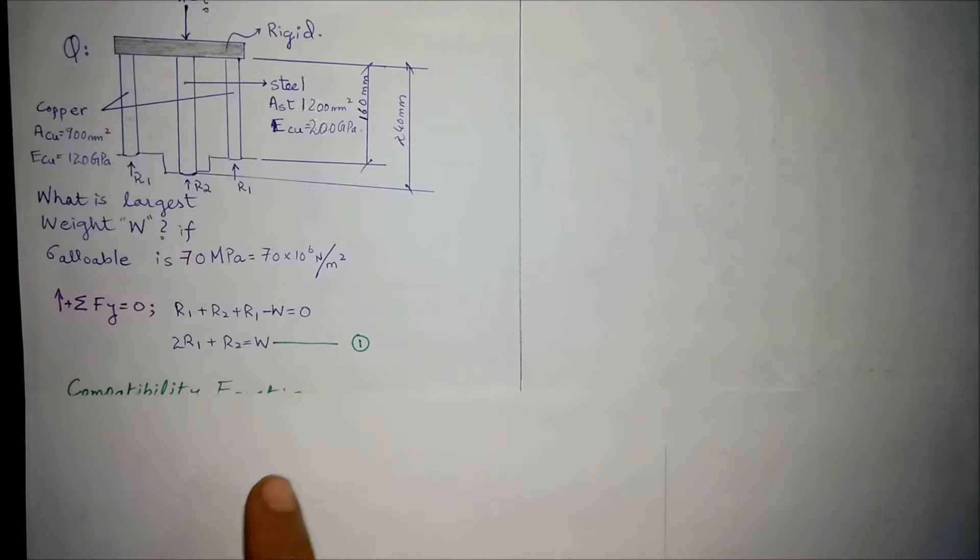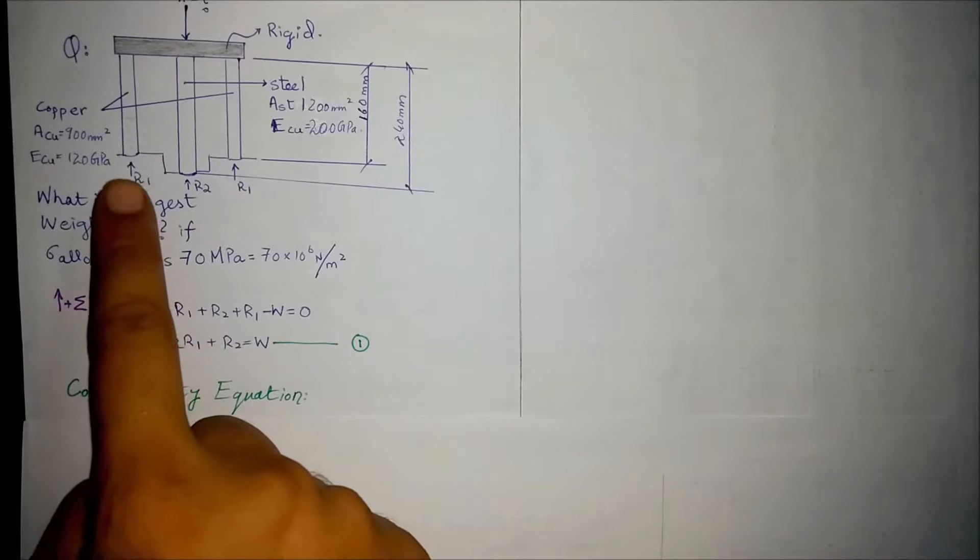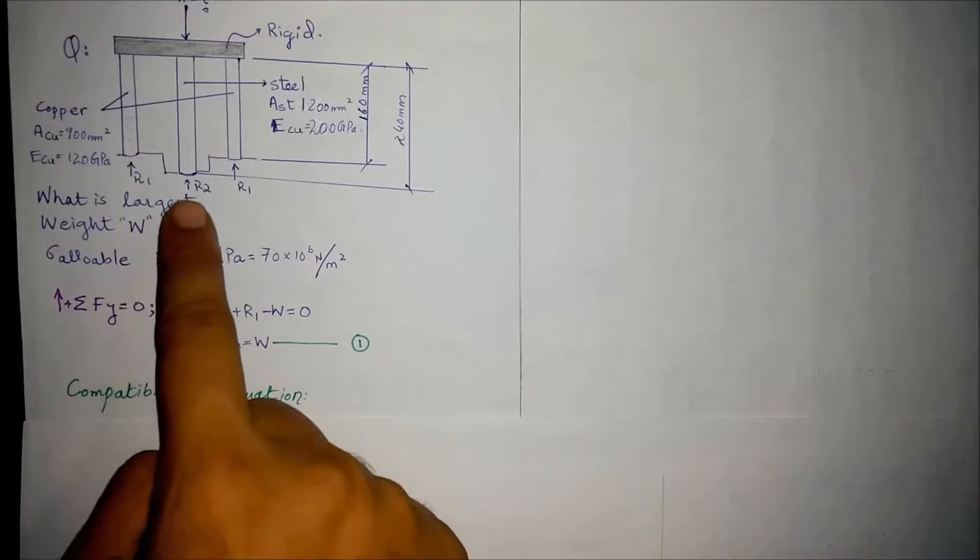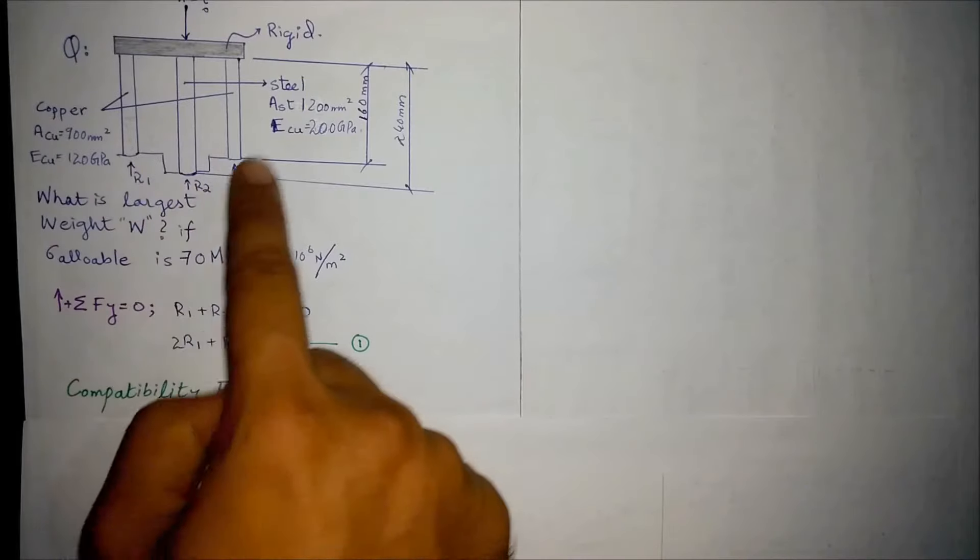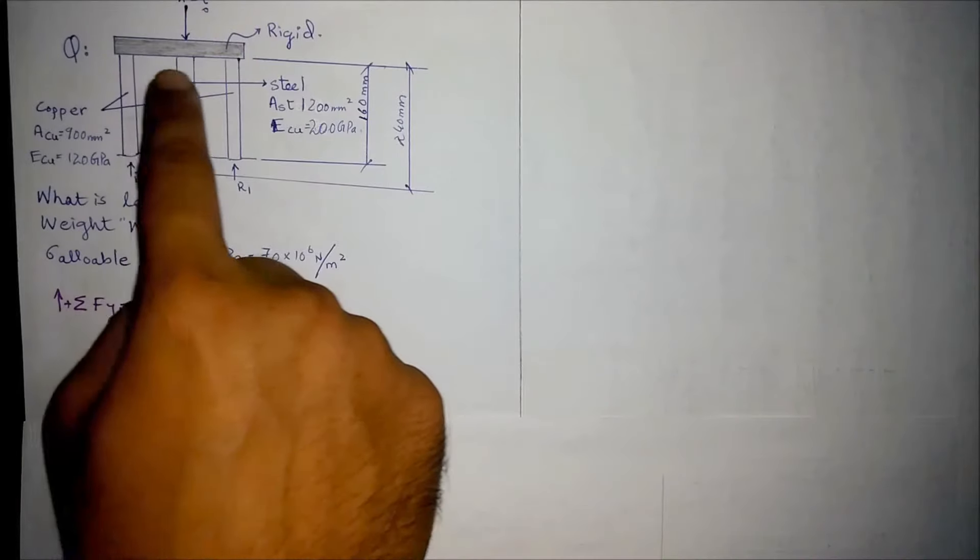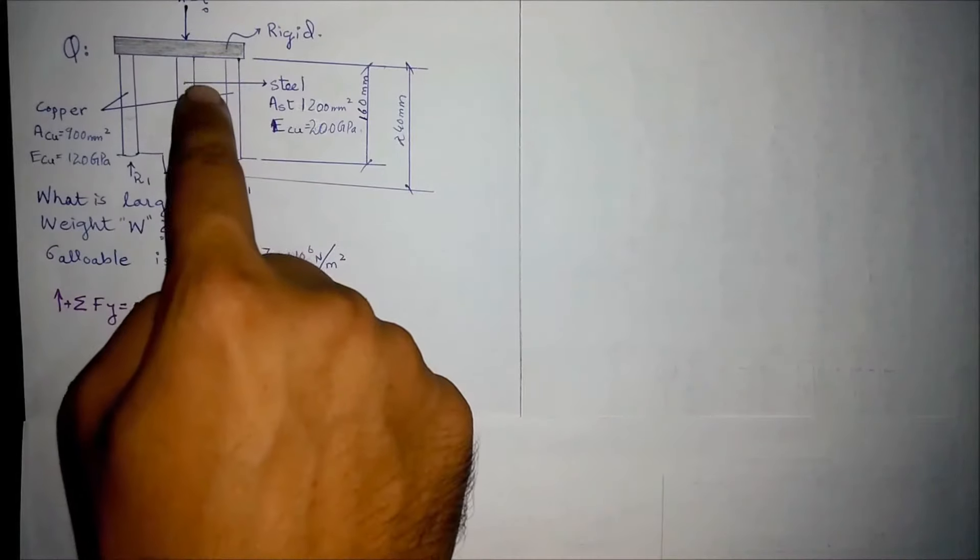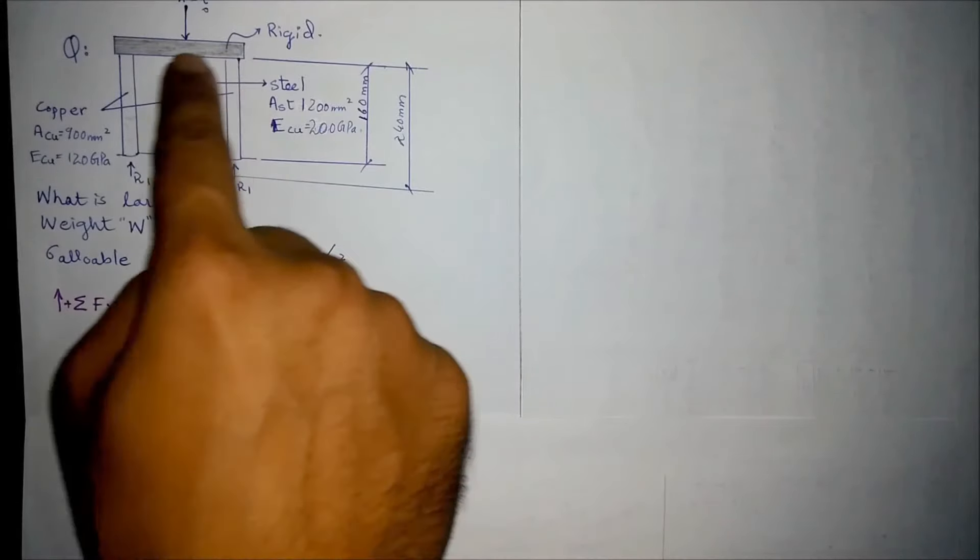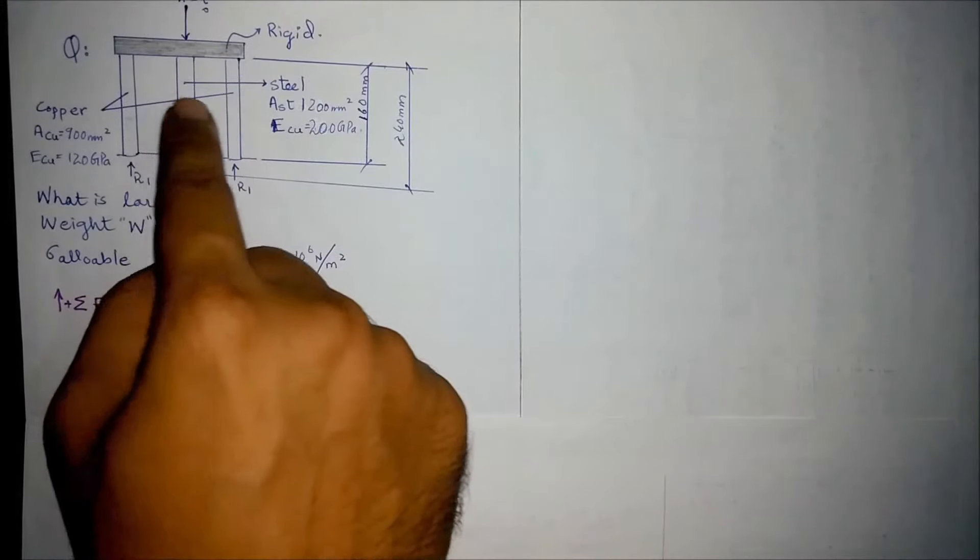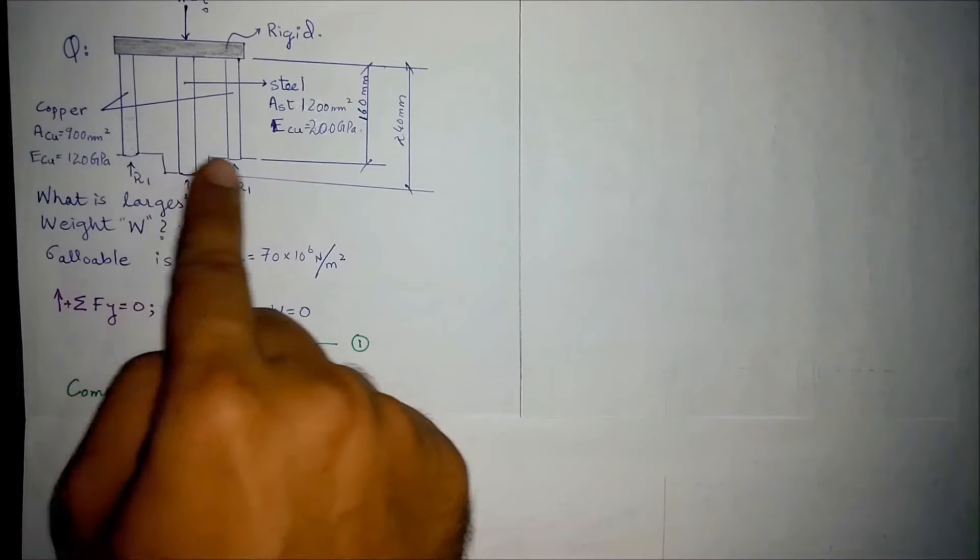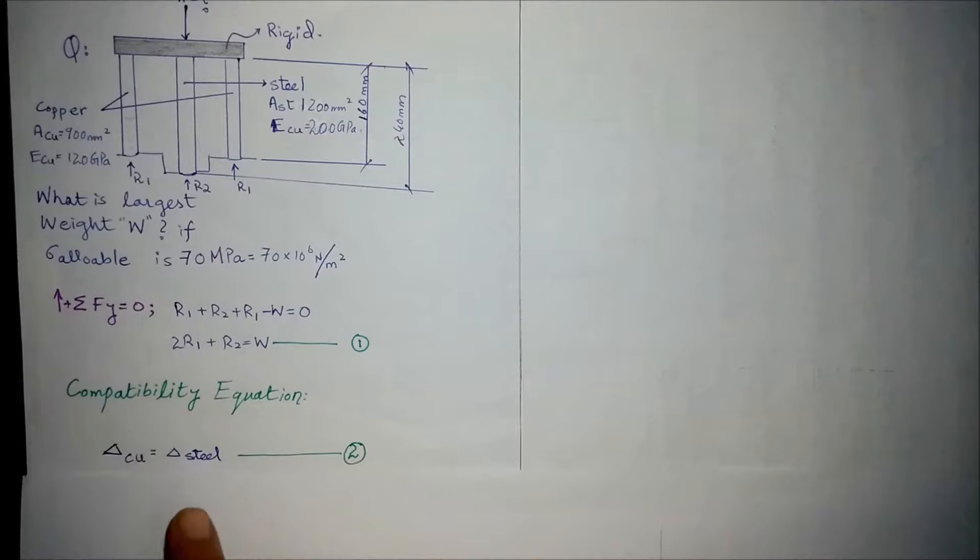Now the compatibility equation for this condition: the strain in both copper piles is the same and the strain in steel is also the same because we have supposed this as rigid. Whenever this whole slab moves down, which is a pile cap, then the same strain would be on both ends. So the strain in steel and copper is same, or we can say that change in length of steel and copper is same.